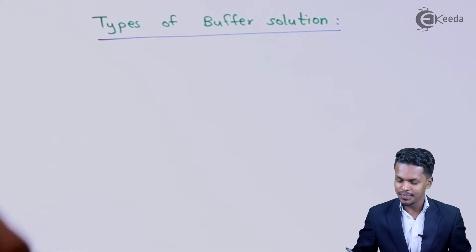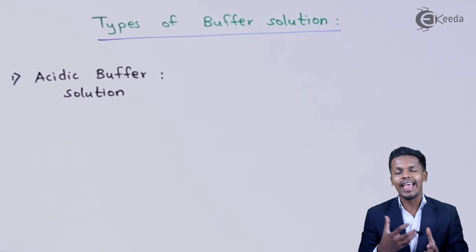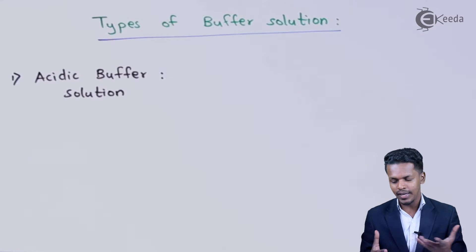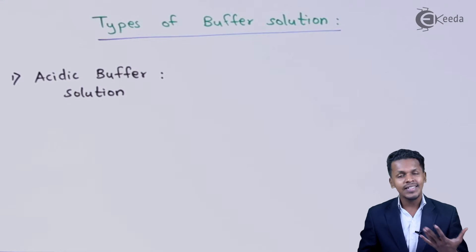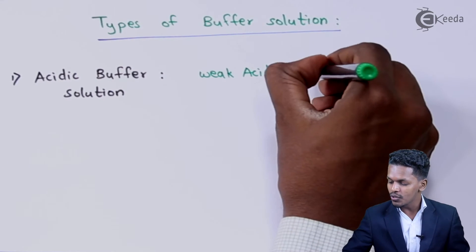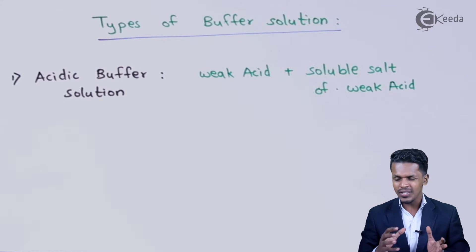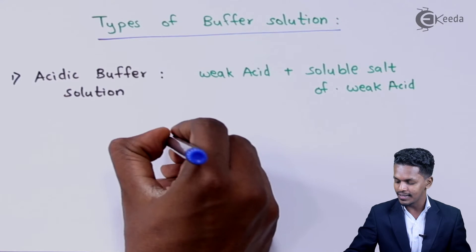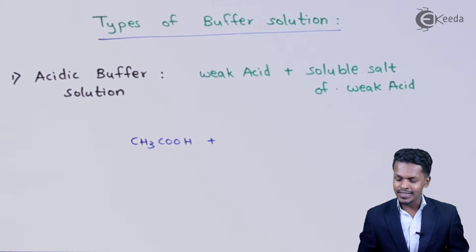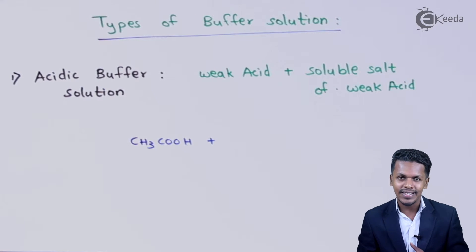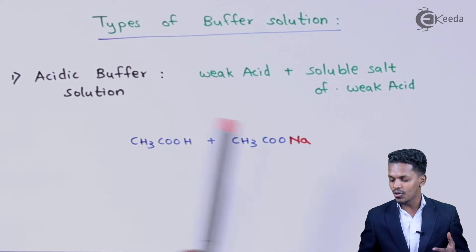Let me elaborate about the acidic buffer solution first. An acidic buffer solution is acidic in nature, and even if we add a strong acid or a small amount of base, the pH value is maintained. It is prepared by combining a weak acid along with a soluble salt of that weak acid. For example, acetic acid (CH3COOH) is a weak acid, and its soluble salt is sodium acetate — this is an example of an acidic buffer solution.